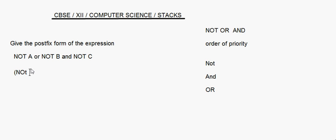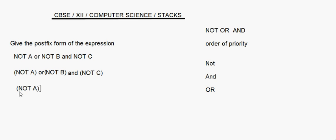Whenever you have 'not', put it in brackets — so this is 'not b', and then 'and not c'. We have or and and here; and has got higher priority, so this 'and' will be evaluated after evaluating the brackets with 'not'. So 'not b and not c' goes into one bracket, and then the whole thing goes into another bracket.